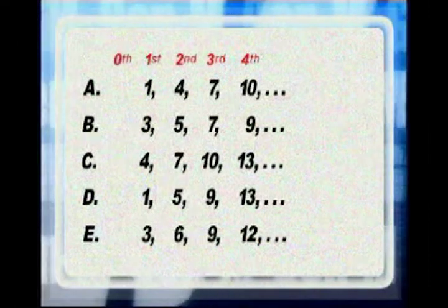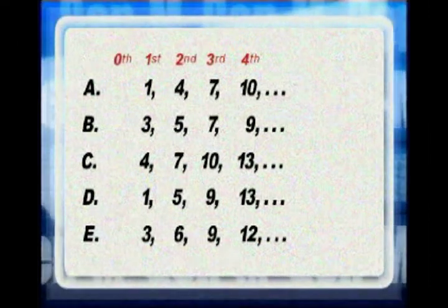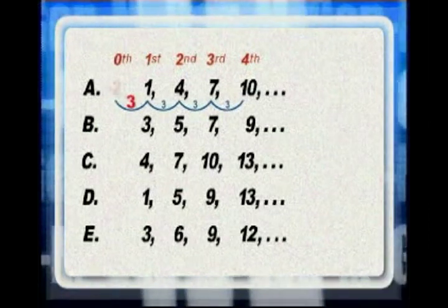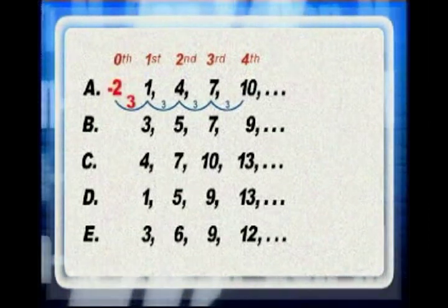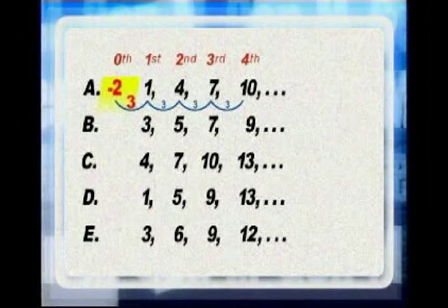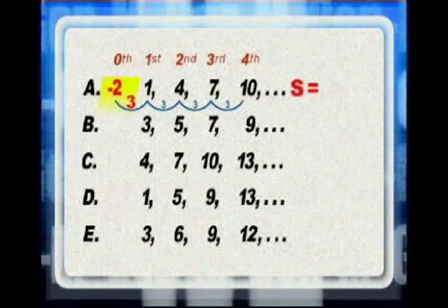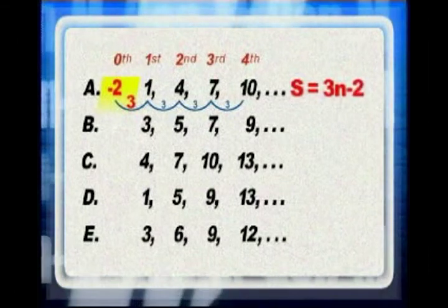The equations in example A to E could have been derived on the basis of the constant differences by extending these to the zeroth figure. The zeroth figure of example A is minus 2 using a constant difference of 3. Thus, we have S is equal to 3N minus 2.